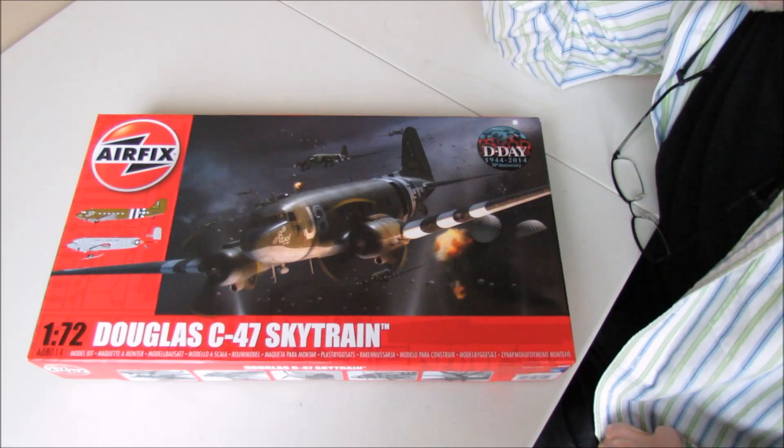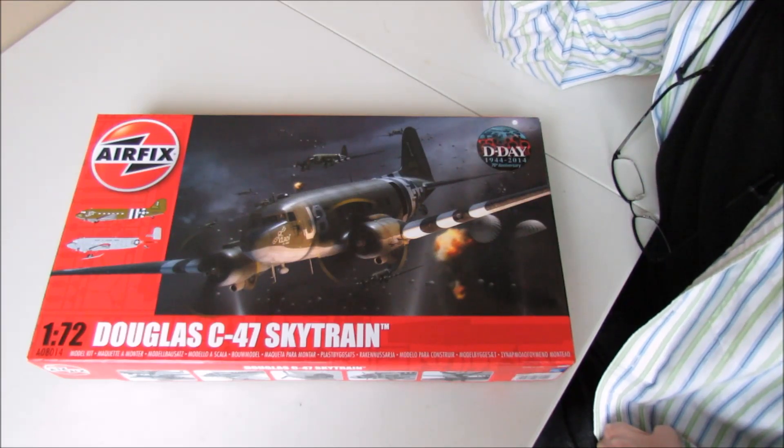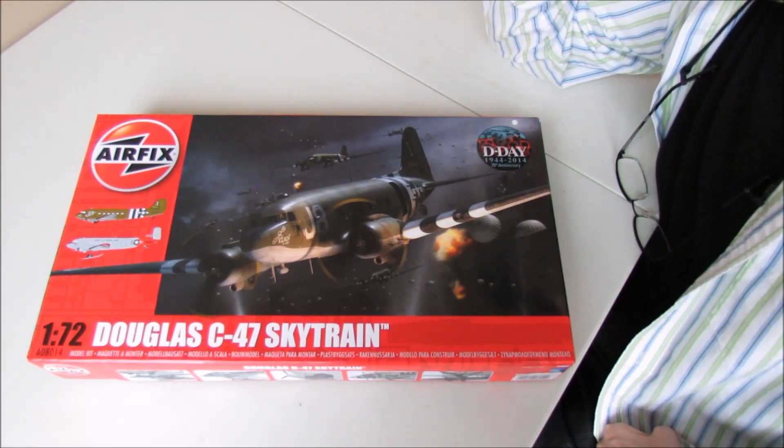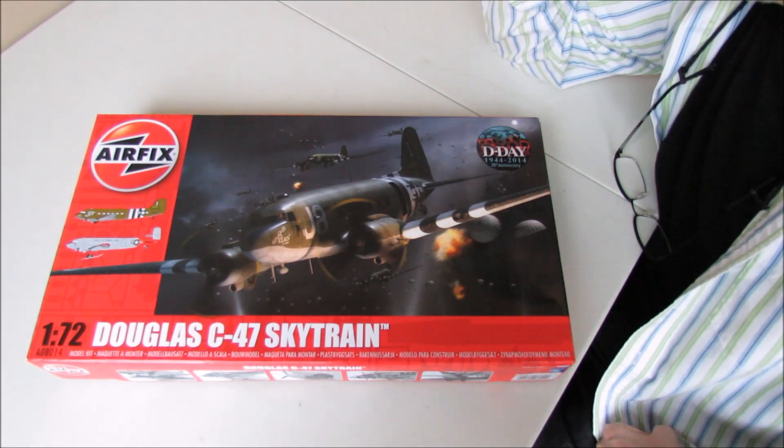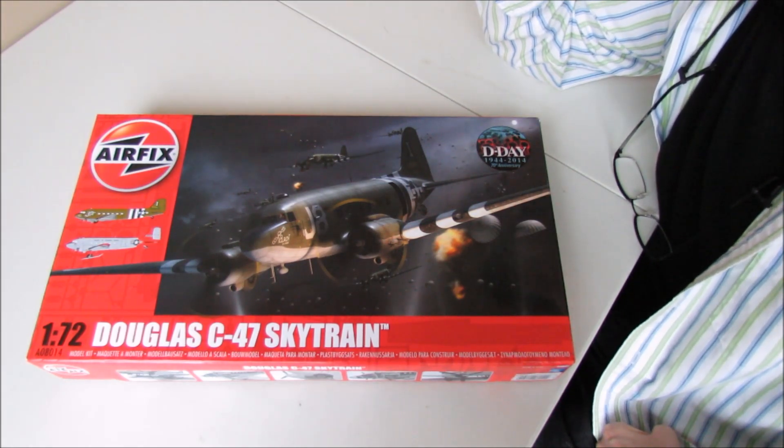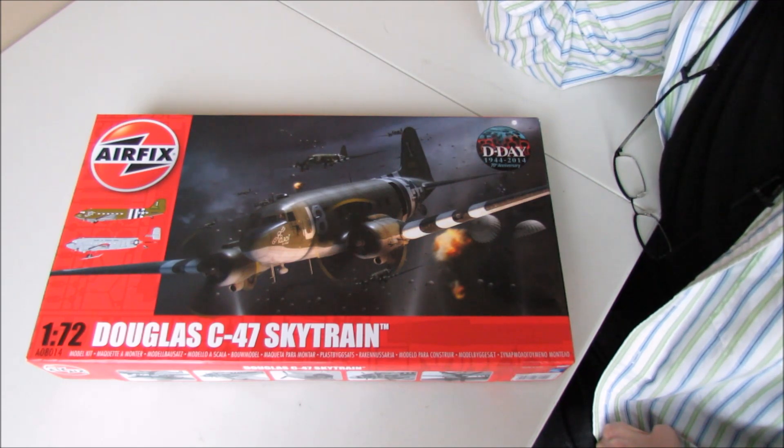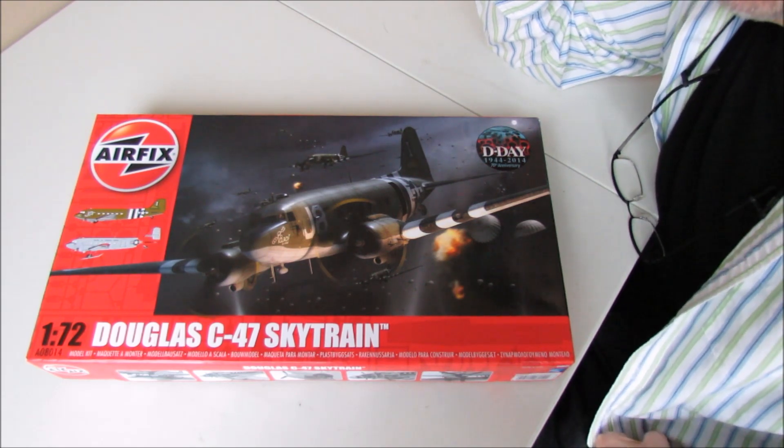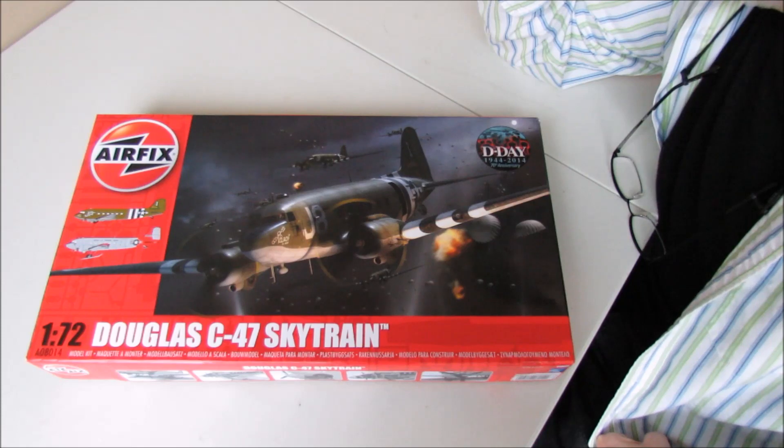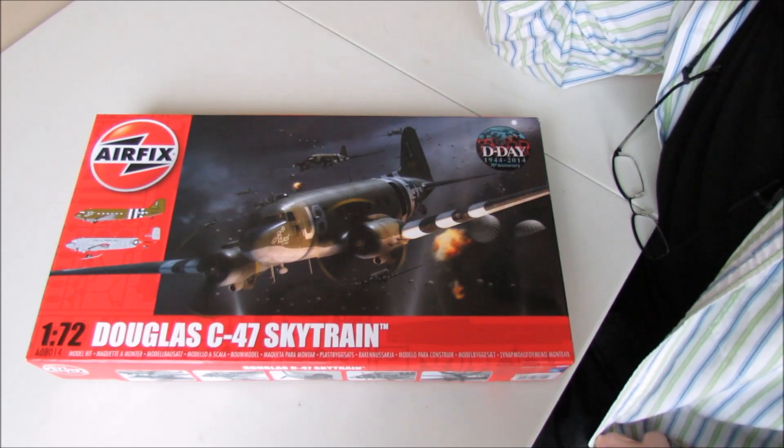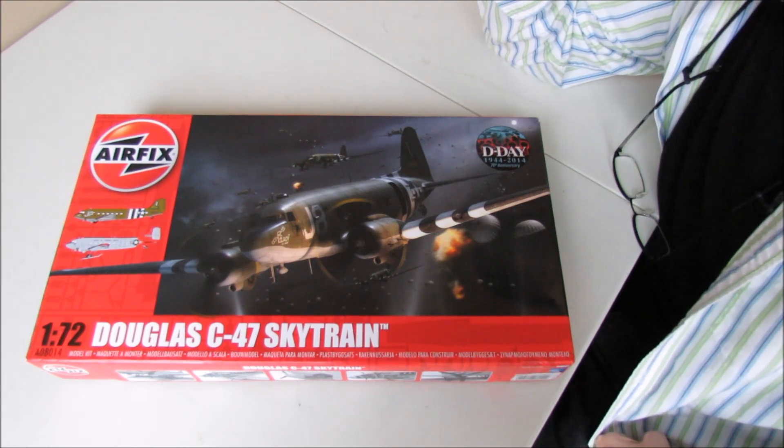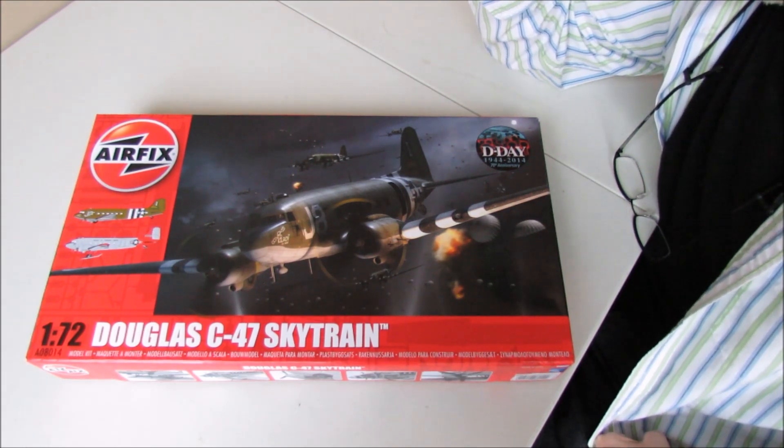I'll be building this with the 101st Airborne Paratrooper Figurine from Verlinden 1/20mm as my final entry into the ISM D-Day 70th Anniversary Group Build and it's also a commemoration built to my father-in-law that was a 101st Airborne Paratrooper during the D-Day landings and was dropped into France from one of the Skytrains.